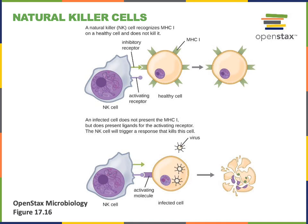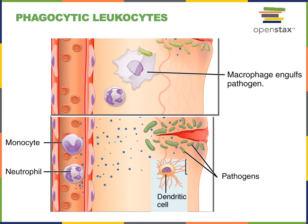Then the natural killer cell can stimulate apoptosis of the infected cell. Phagocytosis is a major defense against infection where leukocytes engulf foreign material such as a bacterial cell. The major phagocytic leukocytes are neutrophils, monocytes, macrophages, and dendritic cells. The illustration here shows a macrophage engulfing a bacterial cell. Macrophages and dendritic cells are both differentiated from monocytes, whereas neutrophils are a different lineage of leukocytes.